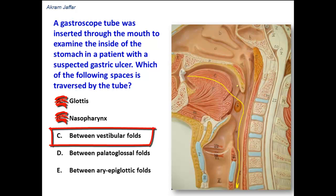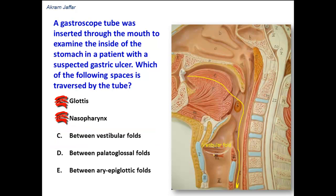Between the vestibular folds — these are the false vocal cords, located above the vocal cords, inside the larynx. The tube should not pass into the larynx, so passing between the vestibular folds is not correct.